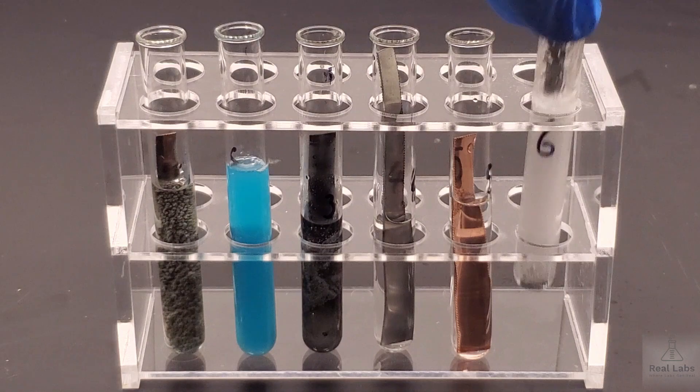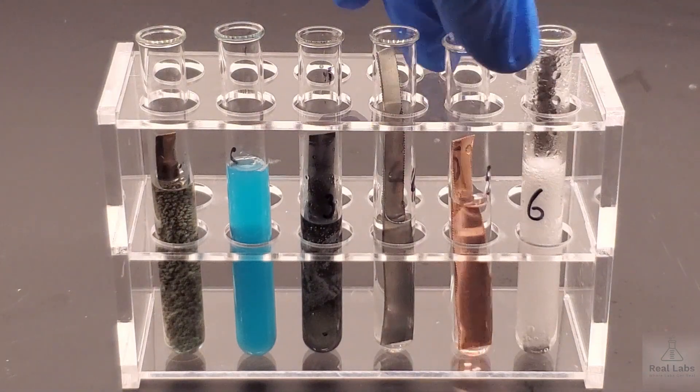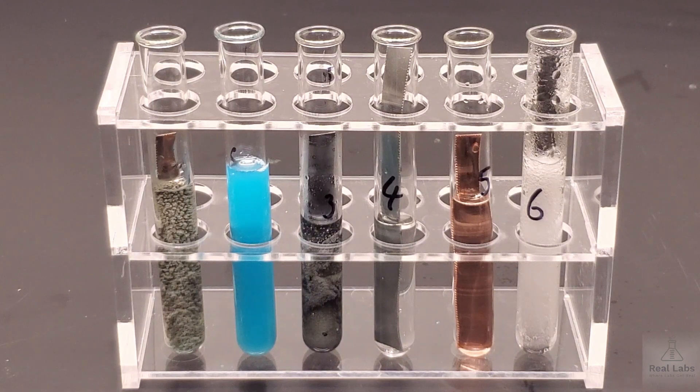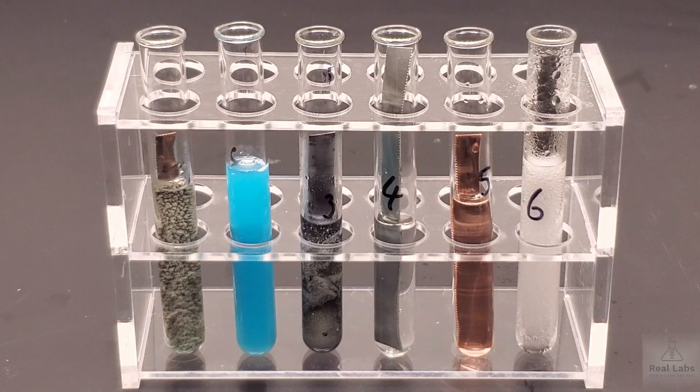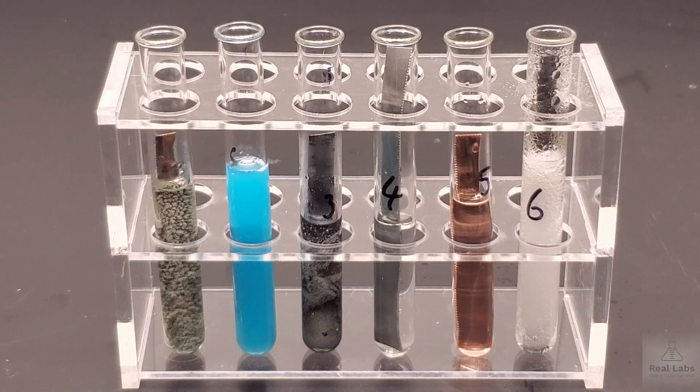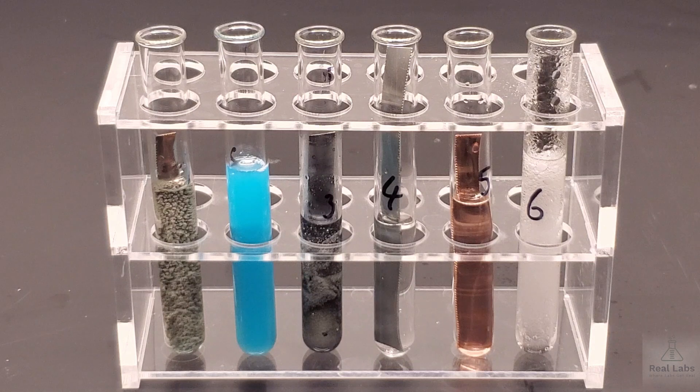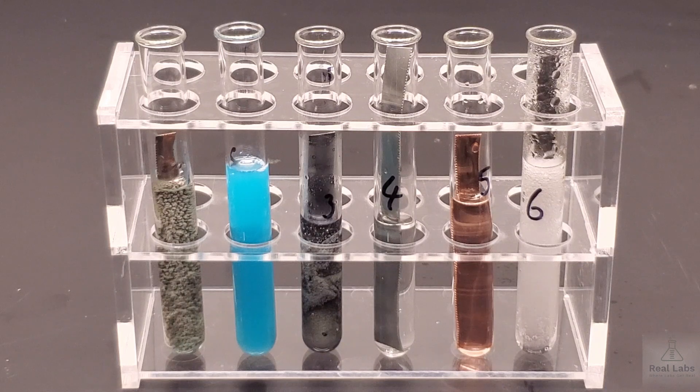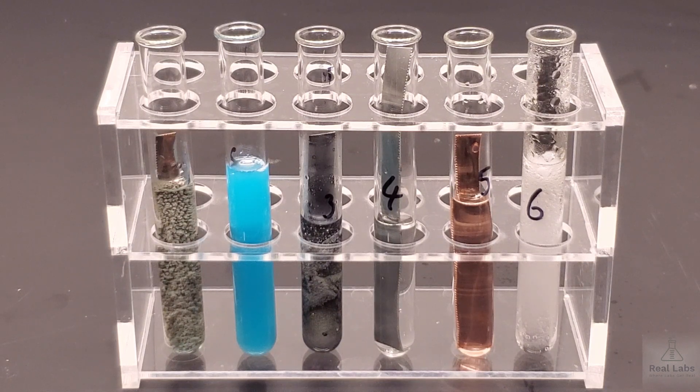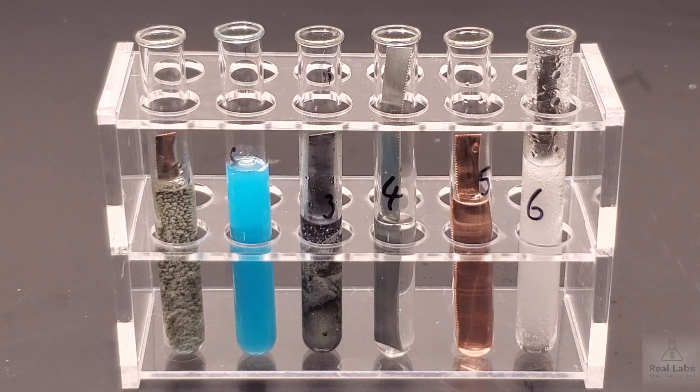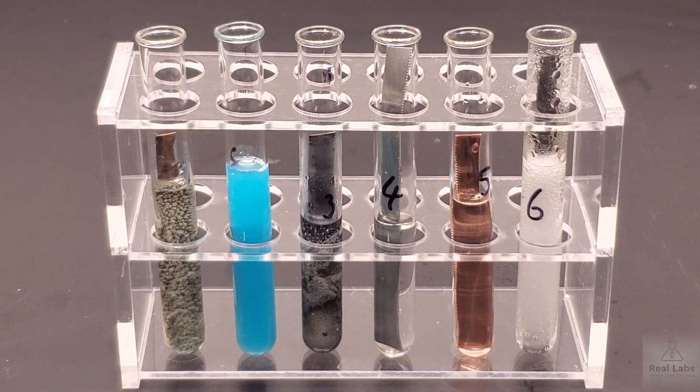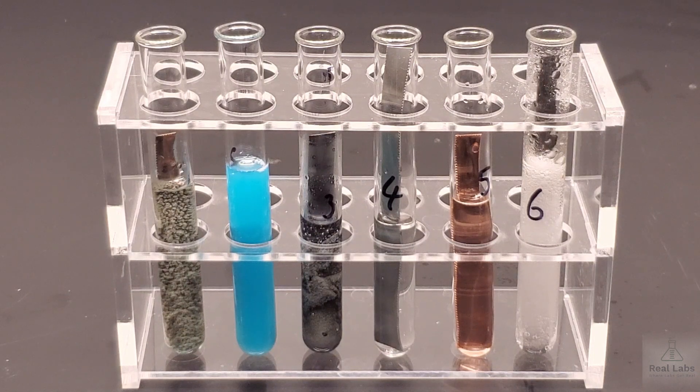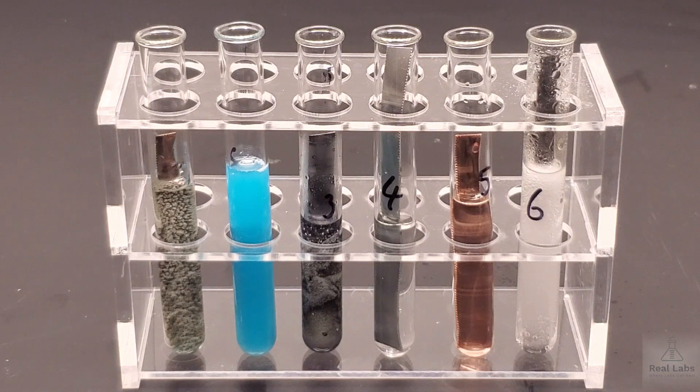Alright, so now you can make observations as to what happened in each of those systems, if there was a reaction or not, and what the observations were. From that, you should be able to determine what the reactivity sequence is for the metals that we're looking at here: silver, copper, lead, and magnesium. And of course, the sulfuric acid represents hydrogen, which we also typically include in that reactivity series. The full name of that series is usually the reactivity series of metals and hydrogen. It's often forgotten, we just call it the reactivity series. So hydrogen is in there. When we use sulfuric acid, we're really considering that as a source of hydrogen ion. Alright, and at this point, you should be able to finish the rest of your lab.